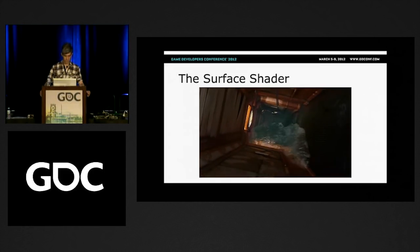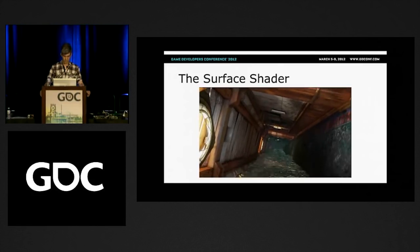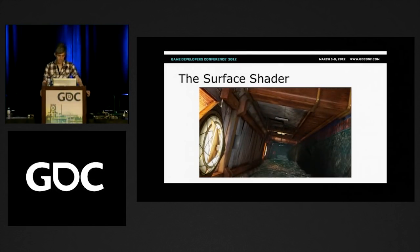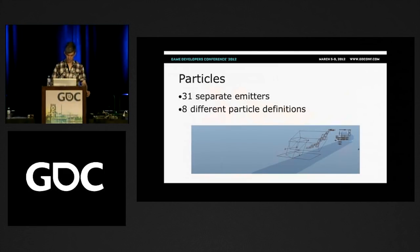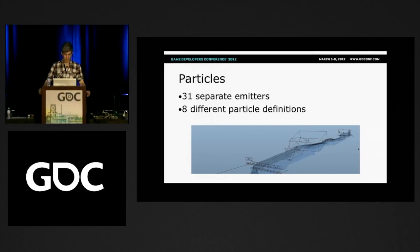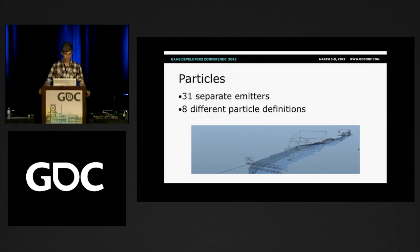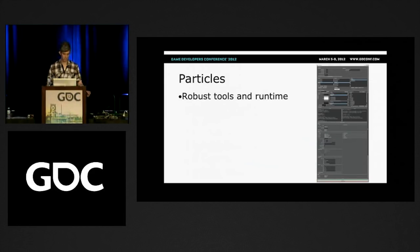Here it is with the surface shader. It really lacks a lot of the visceral quality it needed to have — you want the player to feel like he's really being chased by this giant deluge of water. That visceral quality actually came from the particles. Particles ended up being the really important part of the effect; the surface was secondary. We ended up doing 31 separate emitters, all hand keyframe animated to match the animation of the water, and eight different particle definitions — eight different types of particles that those emitters were emitting.